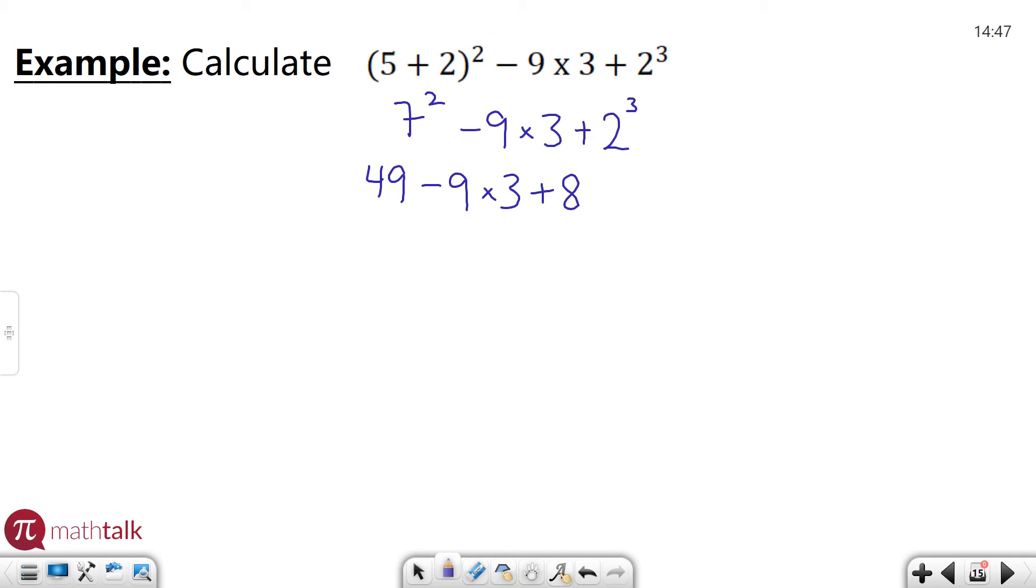I no longer have exponents, so I can move on to the next part of order of operations, which is multiplying and dividing. I do have a multiplication problem here: nine times three, so I need to take care of that first. Nine times three is 27, and then plus eight.